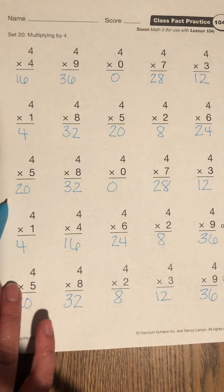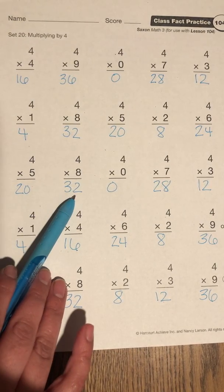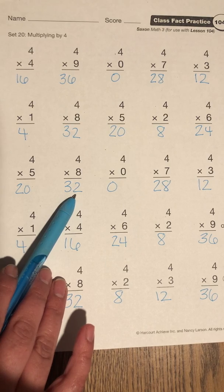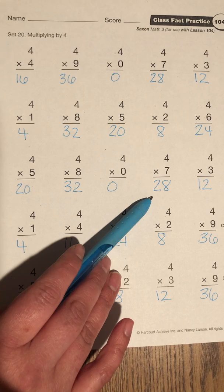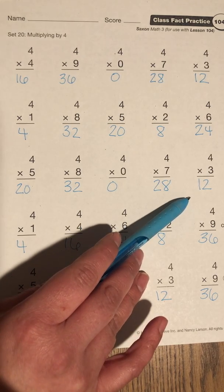Third row. 4 times 5 is 20. 4 times 8 is 32. 4 times 0 is 0. 4 times 7 is 28. 4 times 3 is 12.